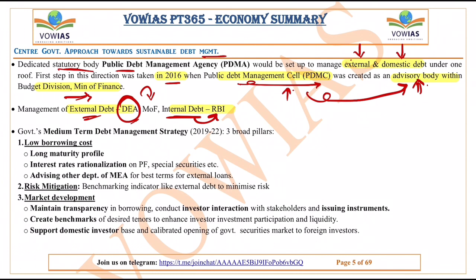The government's Medium Term Debt Management Strategy is based on three broad pillars. The first is low borrowing cost, because when the borrowing cost is low, the government can incur more expenditure on useful things — on capital and other fronts.